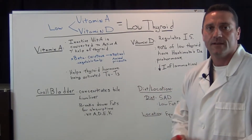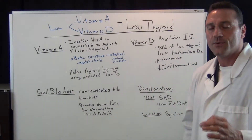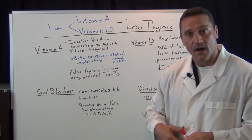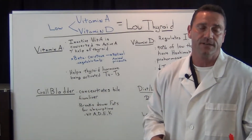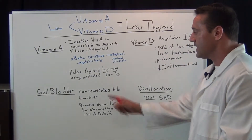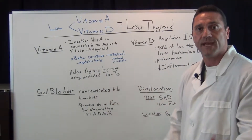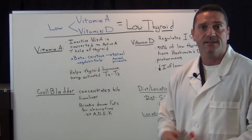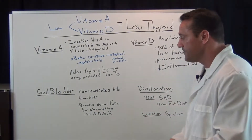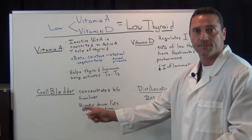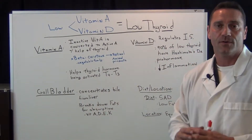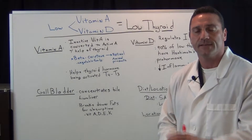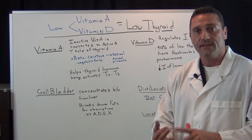Now how does all this happen? A very important organ is the gallbladder — a little tiny organ underneath the liver. Its function is to concentrate the bile made by the liver. When we eat fat, it breaks down the fats for absorption. The important thing is we're looking for the fat-soluble vitamins: A, D, E, and K.